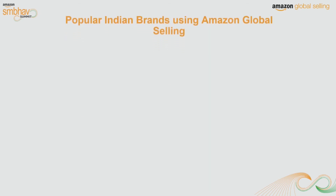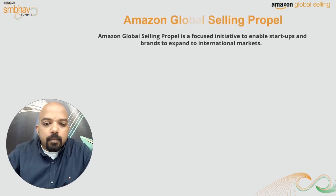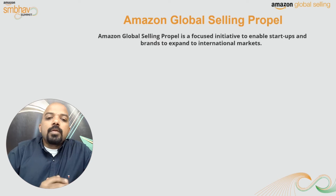In addition to those brands, these are some of the top and popular brands in India with high recall value that are currently utilizing Amazon's e-commerce exports channel to expand their business globally, and they have been doing so very successfully over the past few years. Some of these brands are Amul, Titan, Detall, Himalaya, Viva, Haldiram's, Liberty, and Hi-Design.